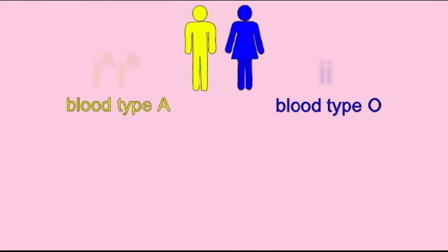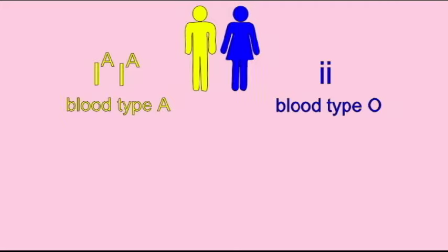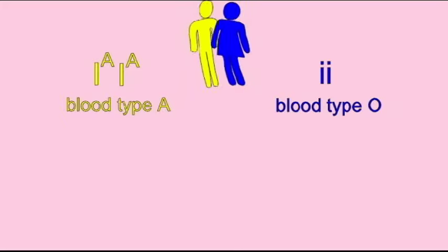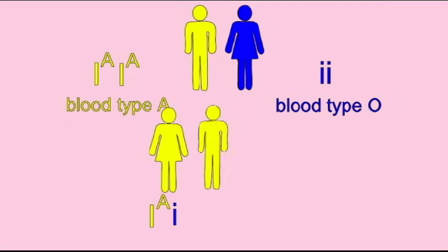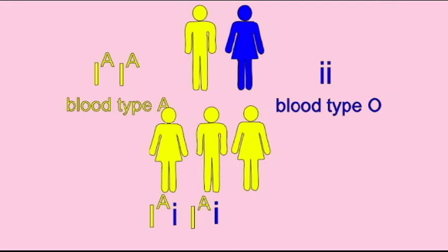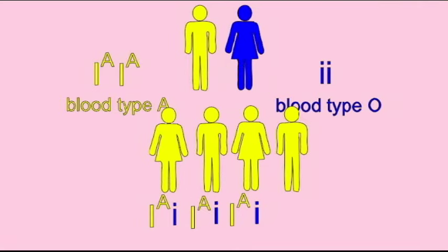If one parent has two alleles or is homozygous for blood type A, and the other parent has two alleles and is homozygous for blood type O, since the A allele is dominant — indicated here with a capital I — and the O allele is recessive, all of the children receive a dominant A allele, and thus all of the children are blood type A.